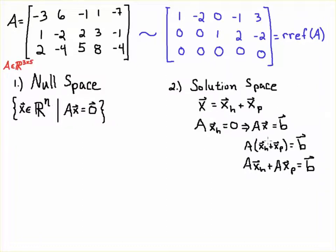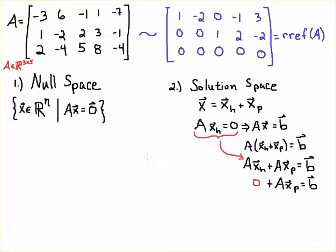If you have Ax = B and you take the solution x = x_h + x_p and plug it back in, distributing A through gives you Ax_h + Ax_p = B.